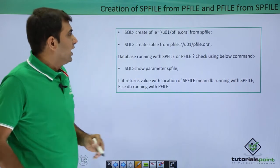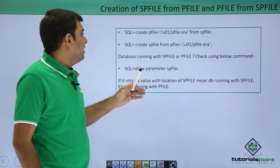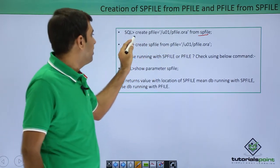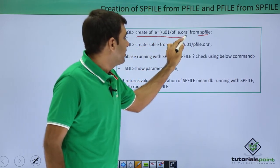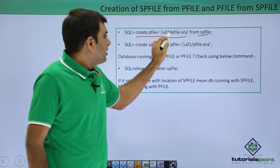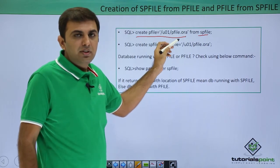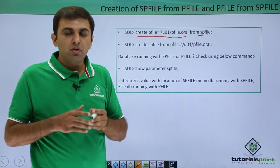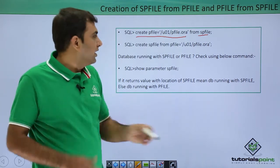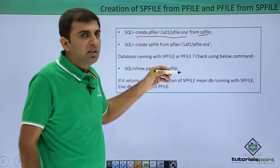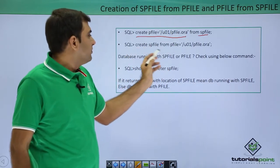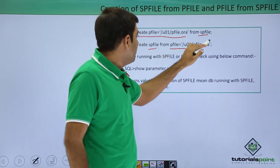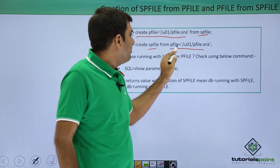Next, how to create spfile from pfile and pfile from spfile. If you have the spfile available and want to create a pfile from it, the command is: CREATE PFILE equals the location where you want to create the pfile FROM SPFILE. Once you create the pfile, you can change the values of all parameters in the pfile and start your database with the pfile. If you want to create spfile from pfile, you use the command: CREATE SPFILE FROM PFILE, specifying the pfile location.